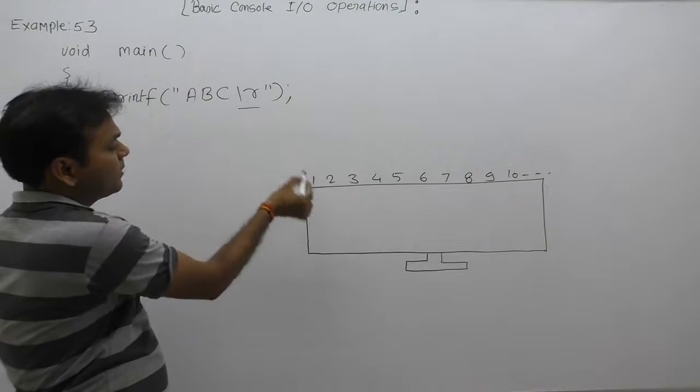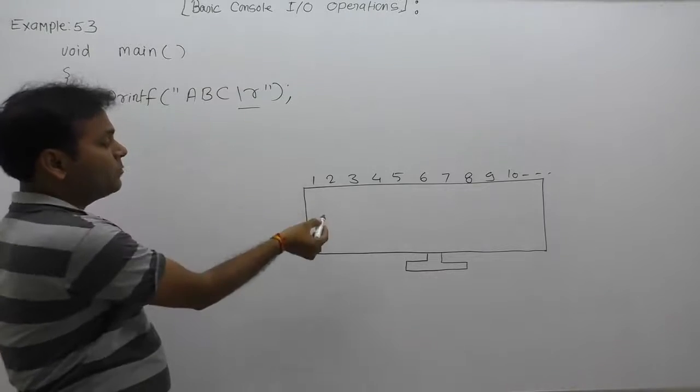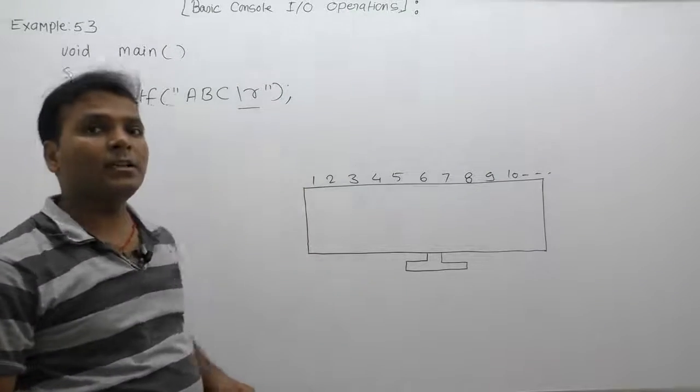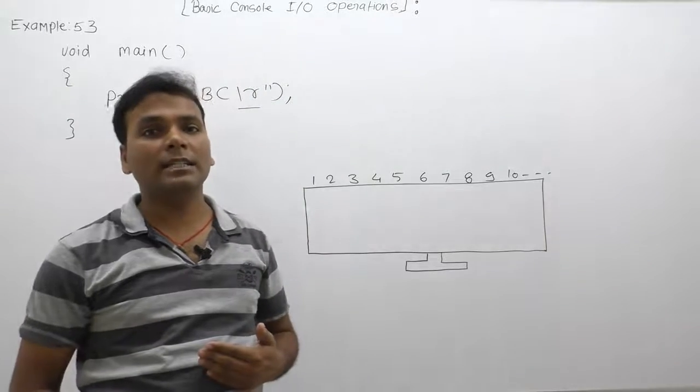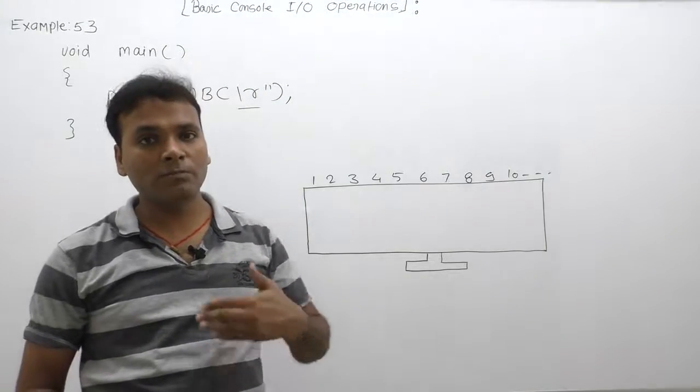slash r it will move the cursor to the first position of the current line. Slash n will move the cursor to the first position of the next line. Similarly, slash r will move the cursor to the first position of the current line.